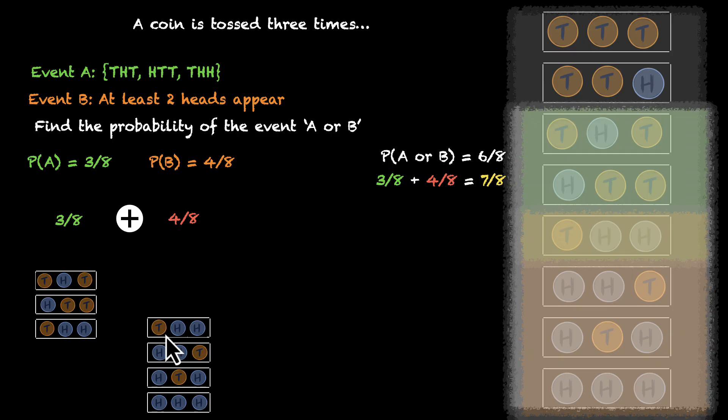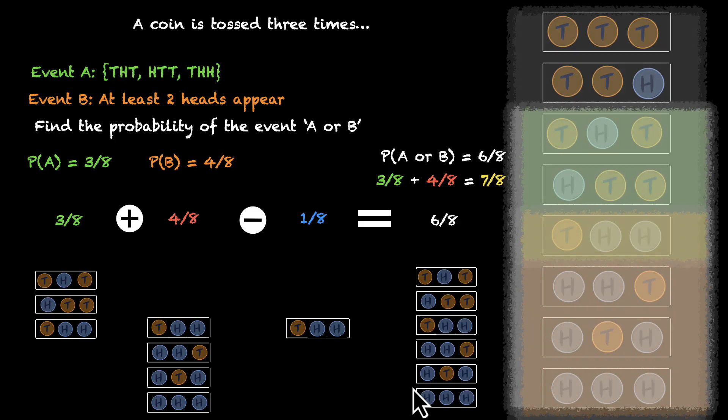So if we want to fix this, we can subtract this. We can subtract this tail head head because it's counted twice. If we subtract one of them, we'll have a proper count of all the events and we'll neatly get six by eight, which comes from these six sample points.